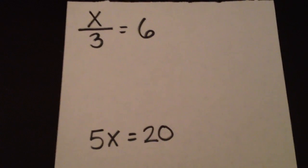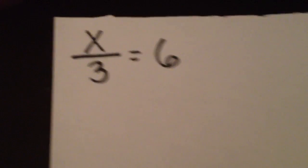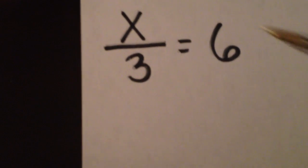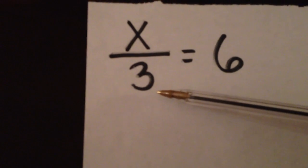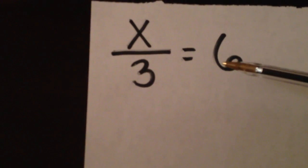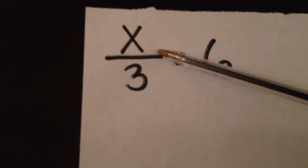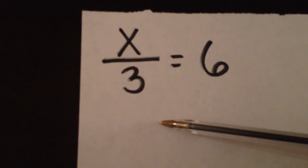We're now going to solve some one-step equations that use multiplication and division. If we look at this first problem, we have x over 3, which is x divided by 3, equals 6. We're going to show the steps instead of guessing what x equals. We're going to show the inverse operation.